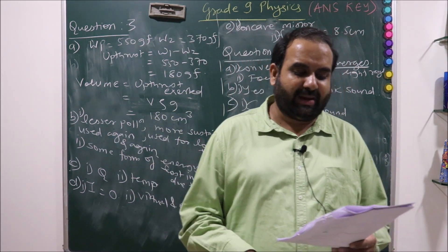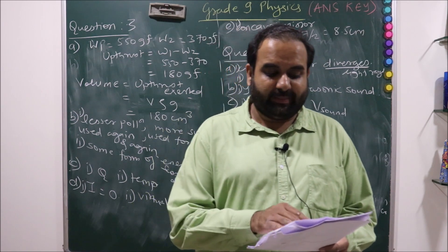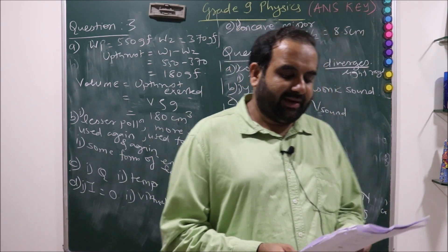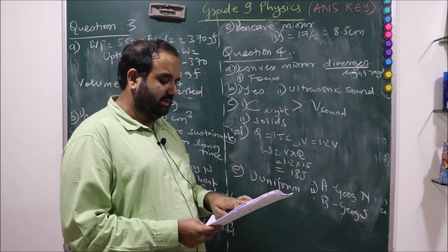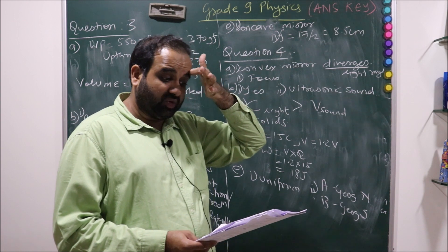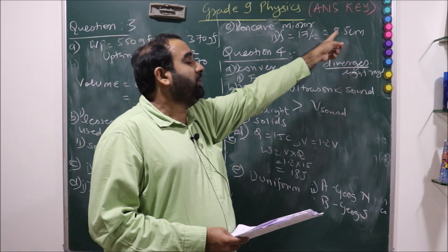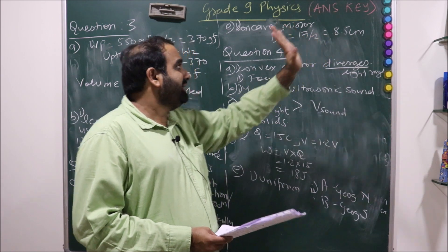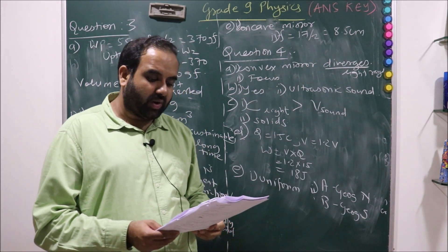The diagram shows the formation of image A dash B dash, so image is on the right hand side of the object kept between the pole and focus in the mirror. This is our sixth case basically. Identify the spherical mirror. It was very simple: concave mirror. Focal length we know is half of radius of curvature. Already the distance has been given in the diagram, so it is 17 upon 2 equals 8.5 centimeter.